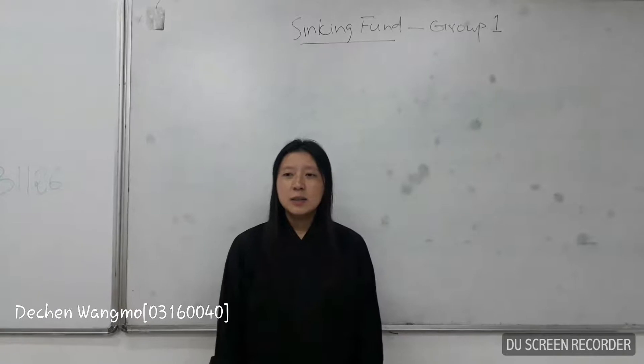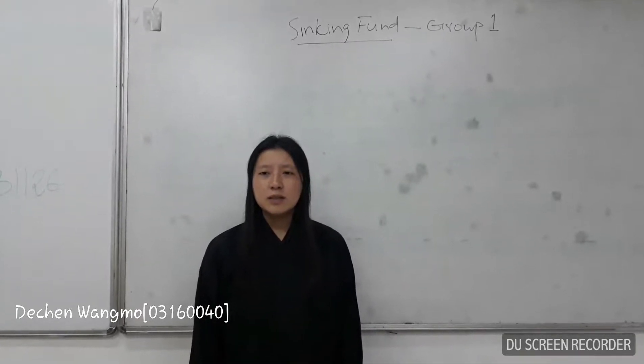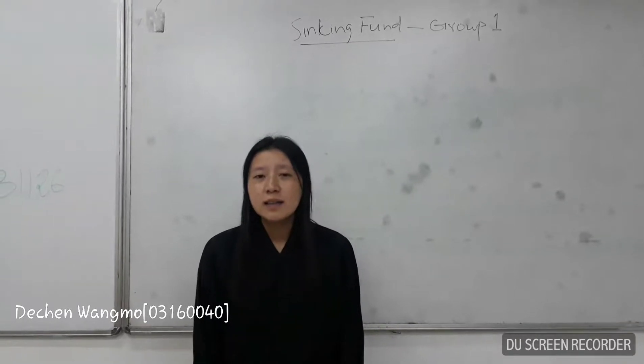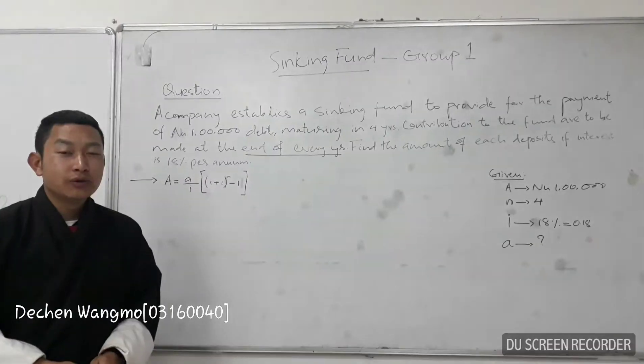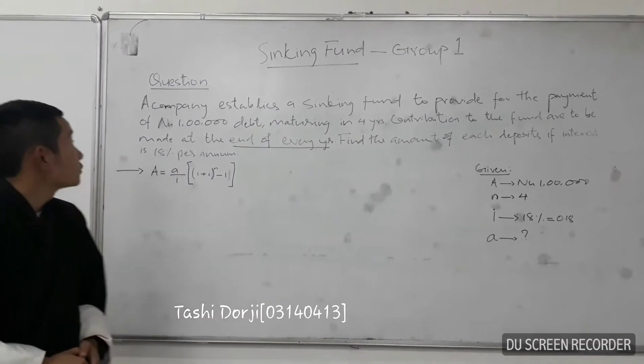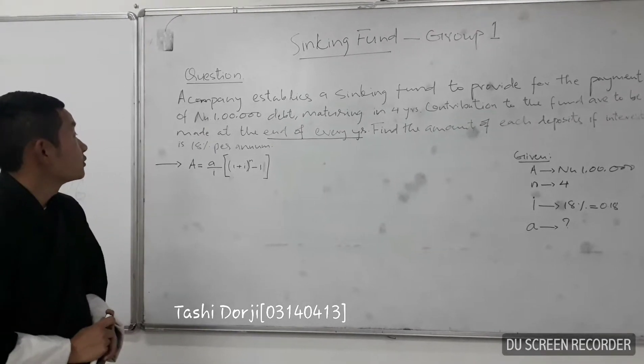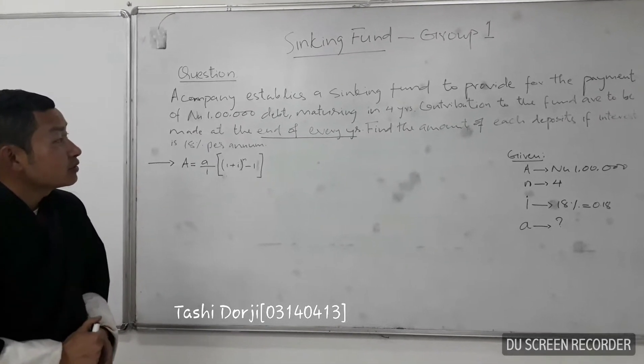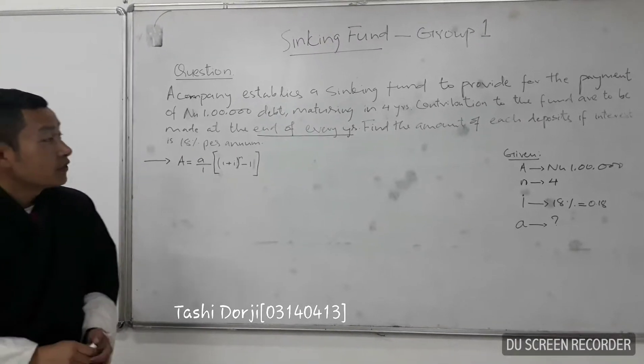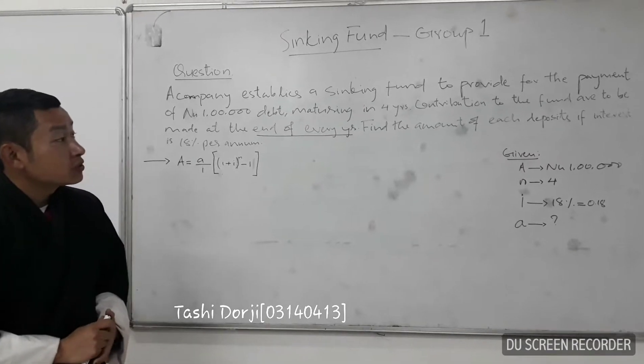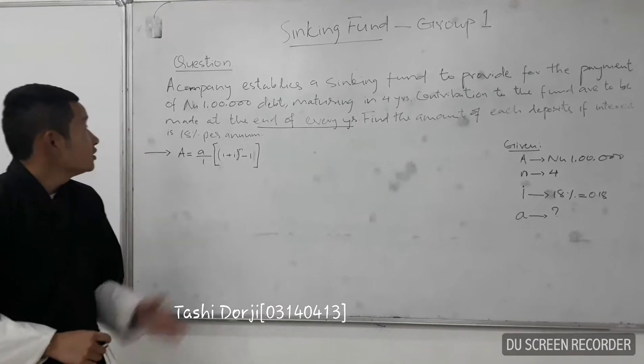For example, a company may create a sinking fund for replacing a machine with a new model by the end of each year. We will solve one question on sinking fund. The question is: a company establishes a sinking fund to provide for the payment of one lakh debt maturing in four years. Contributions to the fund are to be made at the end of each year. Find the amount of each deposit if the interest is 8% per annum.